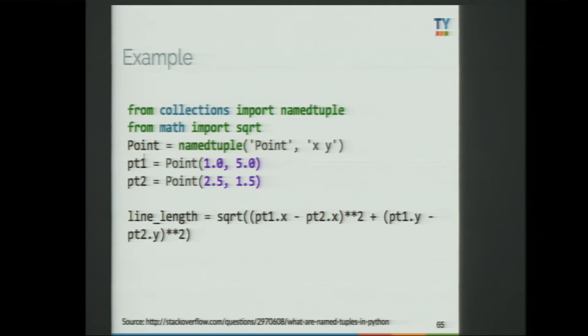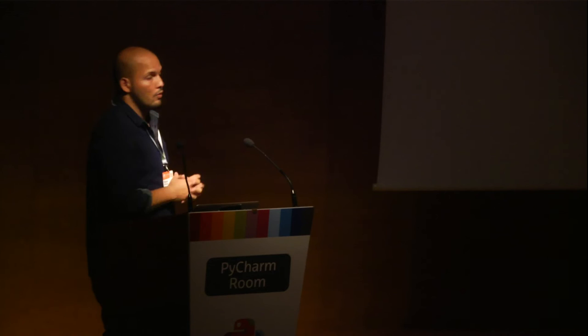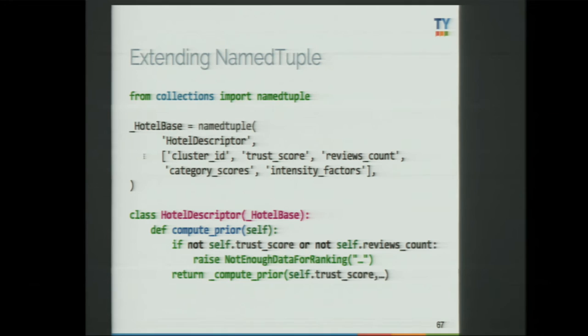Named tuples have cool methods also. If you really need to use a dict, you can transform it into a dictionary, and you can create one from an iterable. I think it's a nice way when writing code to organize it and create domain classes that represent things in your ontology. In our case, we work a lot with hotels, so I created a hotel base and a hotel distributor, inheriting from it and adding a method to calculate something. Passing instances of this class around makes the code more readable.